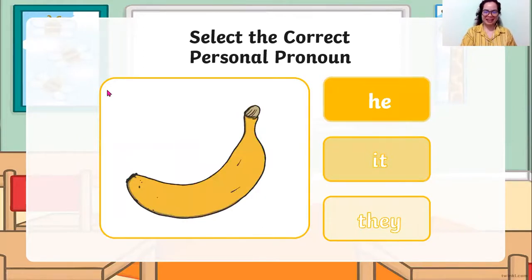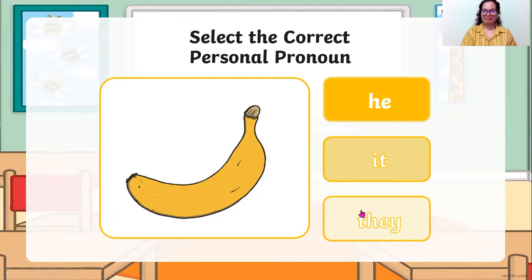Next. Banana — how many bananas? It's only one. So he, it, or they? The answer is it, because it is only one banana.